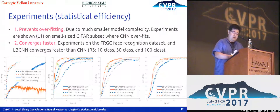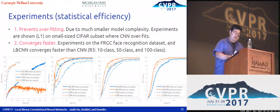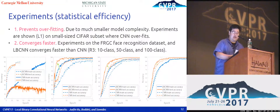Empirically, we have observed that LBCNN has the following properties: number one, it can be trained on a much smaller-sized dataset without overfitting, due to much smaller model complexity; number two, it converges faster than standard CNNs, as observed across many visual datasets.